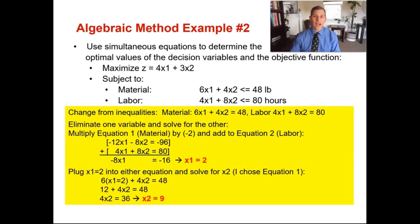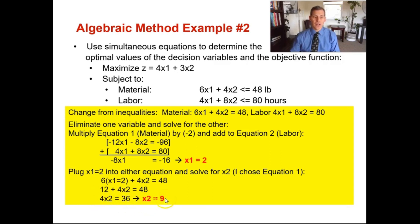Now we plug x1 equals 2 into either one of the equations — I'm choosing equation number one. So 6 times 2 is 12, plus 4x2 equals 48. Taking 48 minus 12 gives 36, and 36 divided by 4 gives x2 equals 9. You've now solved your two decision variables: x1 equals 2 and x2 equals 9.